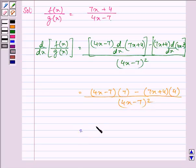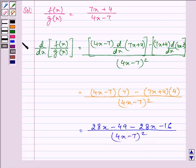Further, on opening the brackets we have 28x minus 49 minus 28x minus 16, the whole divided by 4x minus 7 the whole square.